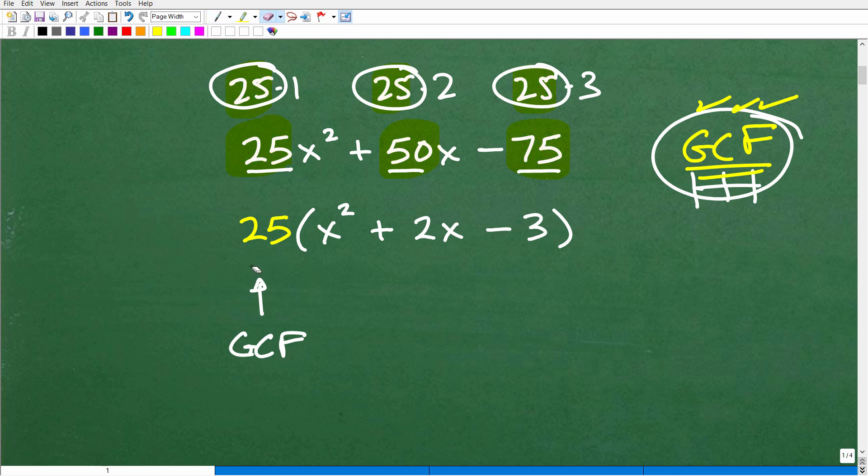So the factors of 25 would be 25 times 1 or 5 times 5. But 50 is 25 times 2, and then 75 is 25 times 3. So you can see here that in terms of factors, each of these numbers have 25 as a factor, and it's the greatest common factor. So that's going to do a couple things here for us. It's going to make our life much easier, and the second thing is this is, in fact, a factor.